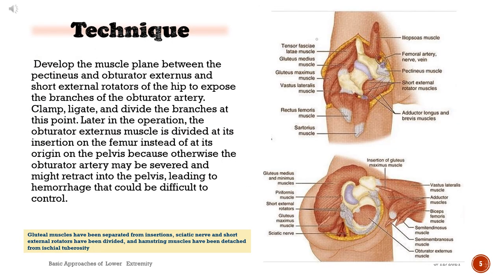Develop the muscle plane between the pectineus and obturator externus and short external rotators of the hip to expose the branches of the obturator artery. Clamp, ligate, and divide the branches at this point.